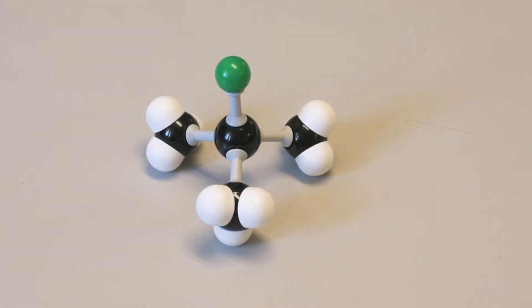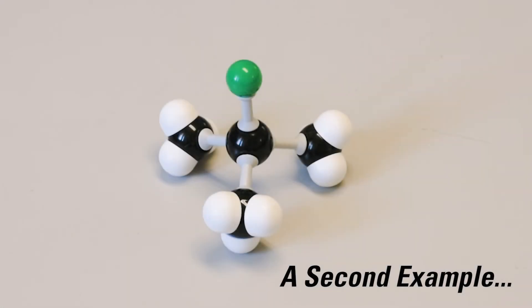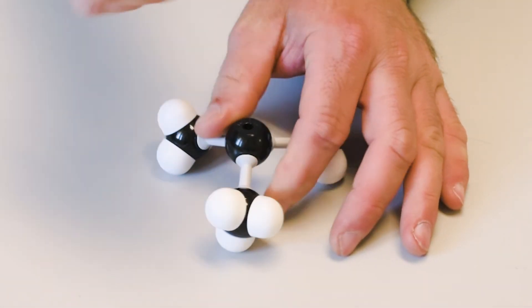A second example of the SN1 reaction is that of an alkyl halide, the exact opposite of the one just discussed. The tertiary alkyl halide starting material contains a polar bond which makes for a good leaving group.